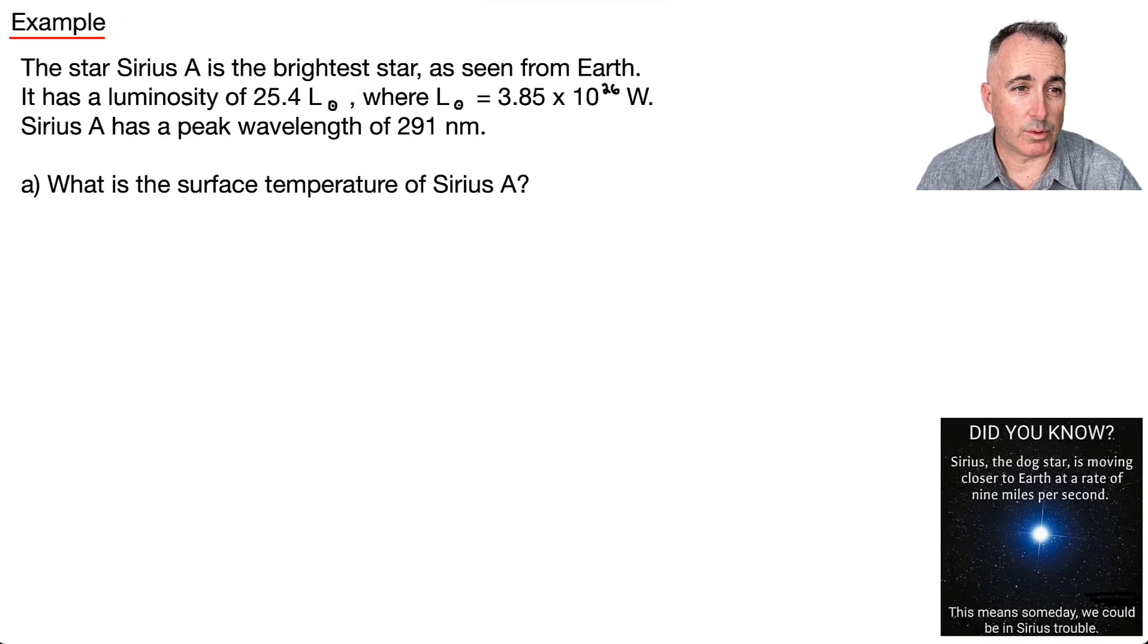Let's do an example with the star Sirius. And by the way, Sirius A, it's actually a binary star. Sirius A is the brightest one, and actually it's the brightest star in the sky. And it has a luminosity of 25.4 L☉ with this little symbol. Remember what that means? That's the luminosity of the sun. And then we're told, oh thank goodness, the luminosity of the sun equals 3.85 × 10²⁶ watts.